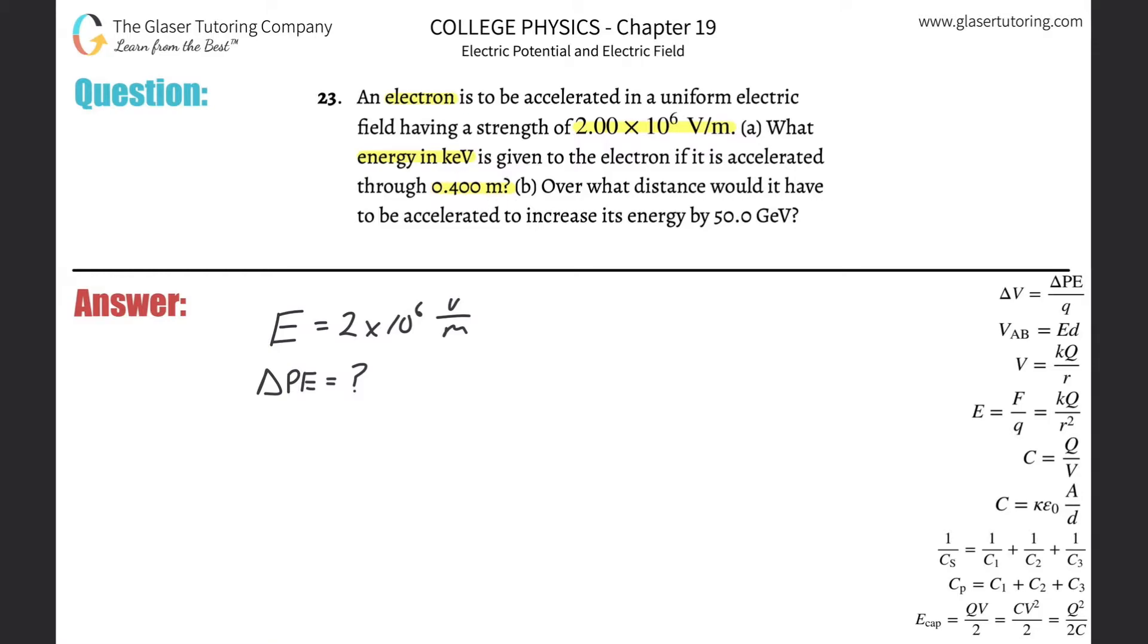We can actually assume that to be the distance between two parallel plates. The reason why I can assume that is they told us a uniform electric field. I know in a parallel plate, the electric field is uniform and constant. So the distance therefore is going to be 0.4 meters. And I also know one other thing.